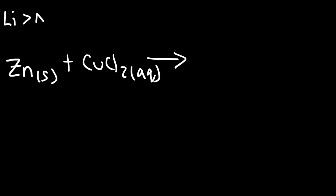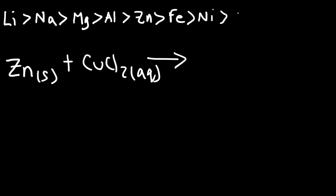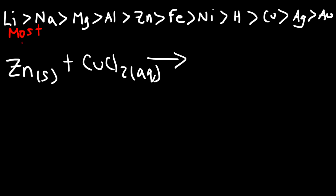You need to know that lithium is more reactive than sodium, which is more reactive than magnesium, and then you have aluminum, zinc, iron metal, nickel, hydrogen, copper, silver, and gold. Silver and gold are the least reactive noble metals. Lithium is the most reactive, and reactivity increases towards the left. Elements like silver and gold are the least reactive.